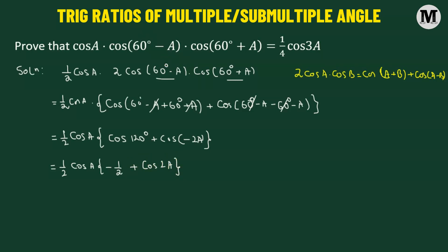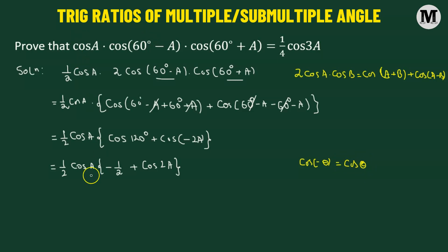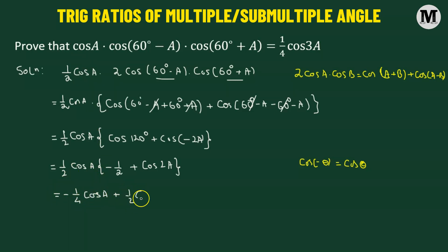We have used the fact that cosine of some negative angle theta equals cosine of angle theta. So now what we'll do: we multiply to get negative one quarter cosine of angle A, added to half times cosine of angle A times cosine of angle 2A.